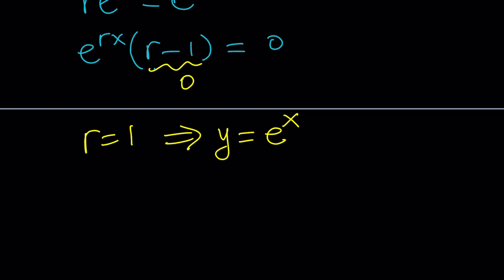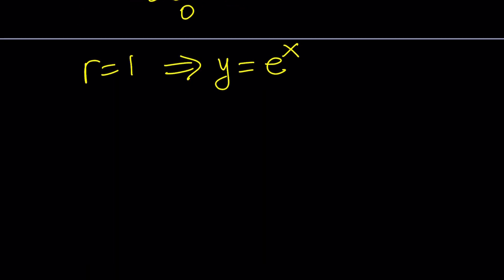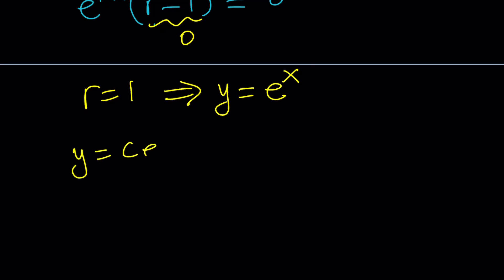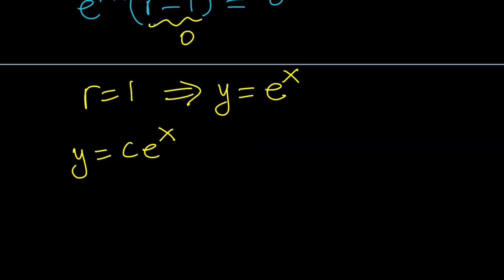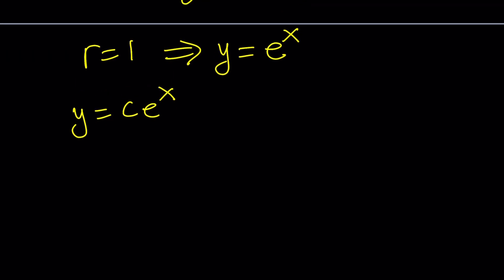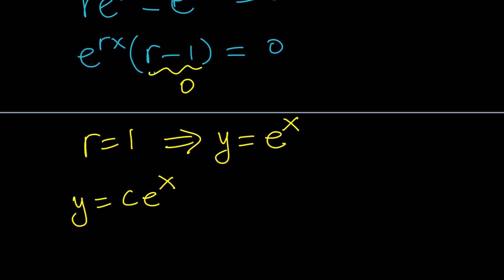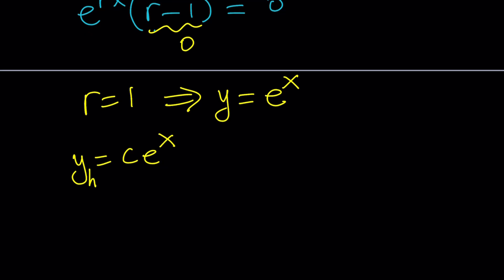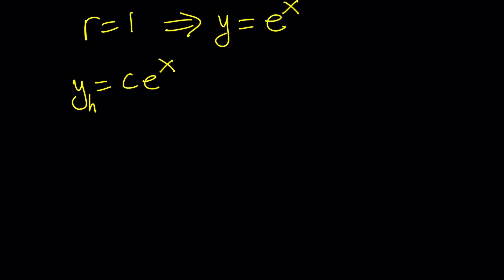Obviously there are many other solutions. If y equals e^x works, then y equals c times e^x also works. So you could assume your solution is c times e^(rx), and you'd get the same thing. So y equals c·e^x is the homogeneous solution — let's call it y sub h. Now I'm going to look for the particular solution, y sub p, which satisfies the non-homogeneous case.